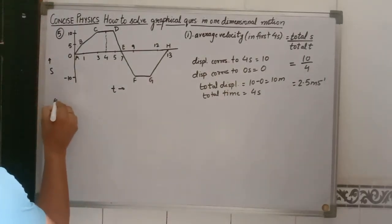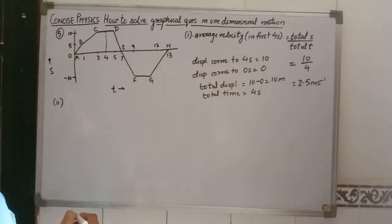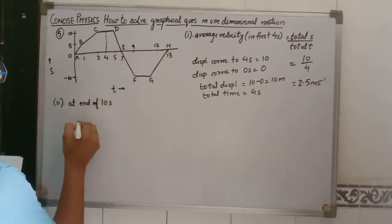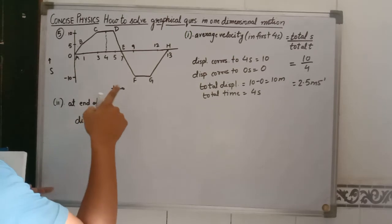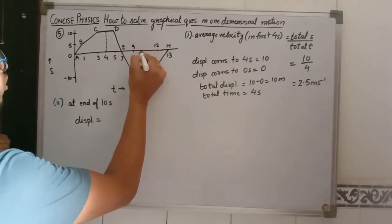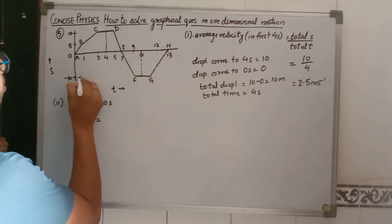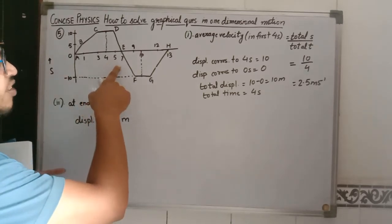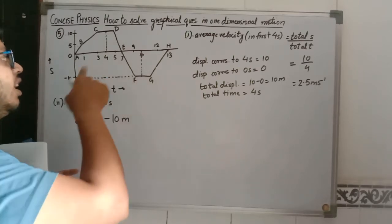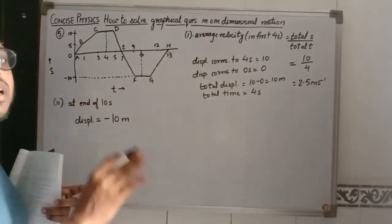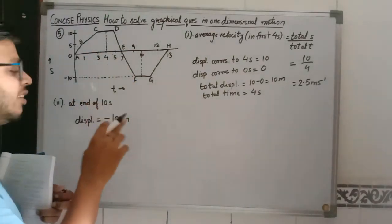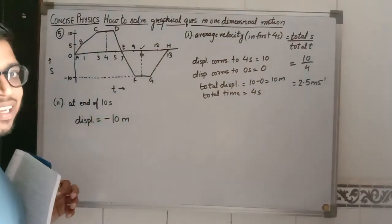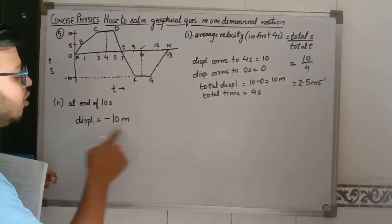In the second part, we have to find the displacement from the initial position at the end of 10 seconds. Looking at the graph, 10 seconds comes after 9, and the corresponding displacement value is minus 10 meters. We write minus because the object is moving opposite to its initial direction — the graph goes downward. If the graph moves upward, values are positive; if the graph goes below the time axis, the answer is written with a negative sign. So at 10 seconds, the displacement is minus 10 meters.